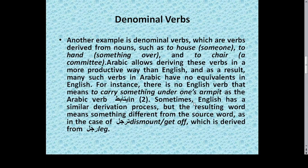As in the Arabic verb يتأبط. Sometimes English has a similar derivation process, but the resulting word means something different from the source word, as in the case of ترجل, meaning to dismount or get off, which is derived from the word for leg. For example, the noun house becomes to house someone in English, and to hand over something means to transfer something to someone, and to chair a meeting means to lead or manage it.